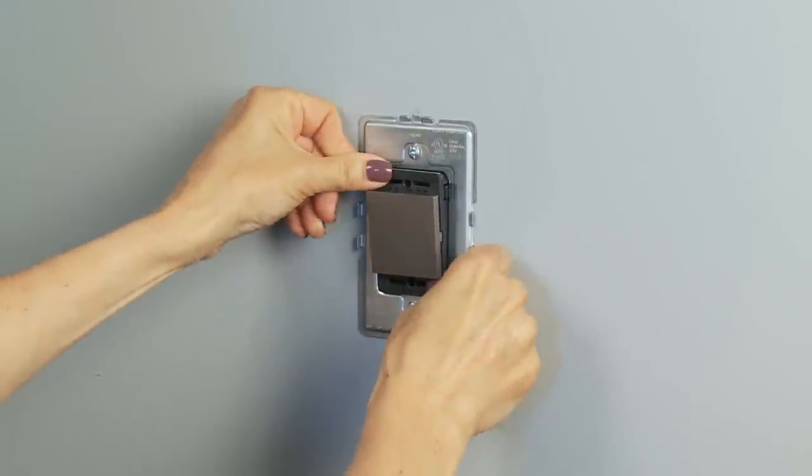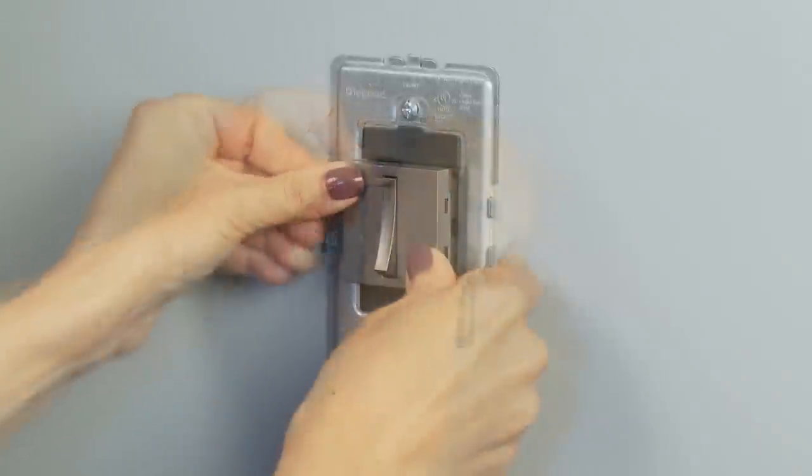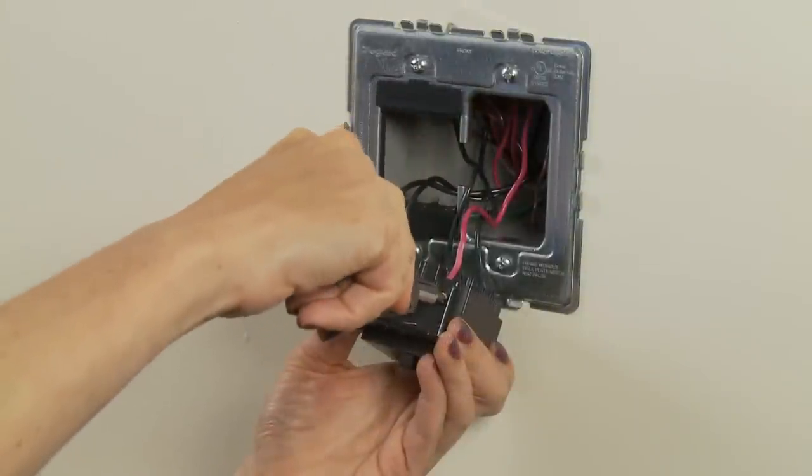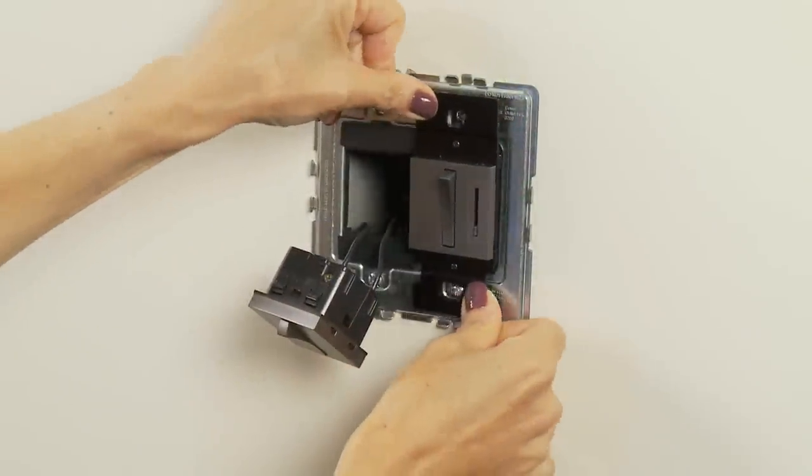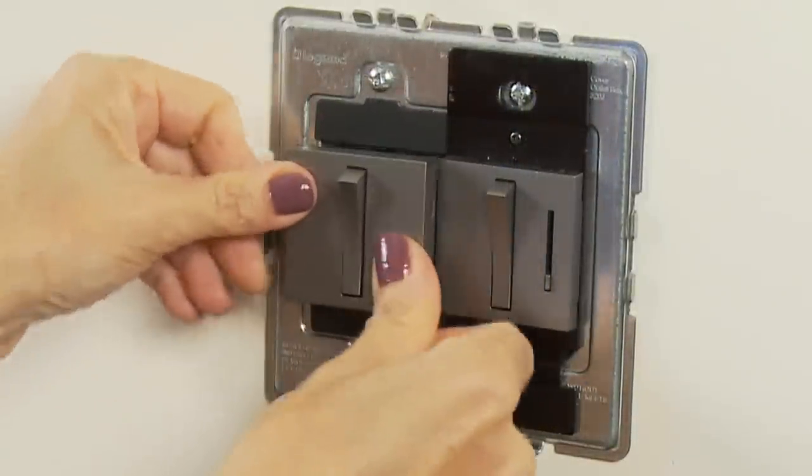Snap your device into the frame, pushing firmly until you hear a snap. If you are wiring more than one device in a two-gang, three-gang, or four-gang configuration, wire all of the devices before snapping any of them into the frame.